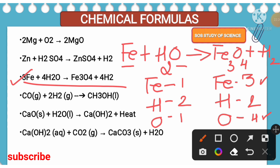To balance iron, just write three in front of Fe. Three into Fe, you get three Fe — remove one atom and write three. Now iron is balanced.